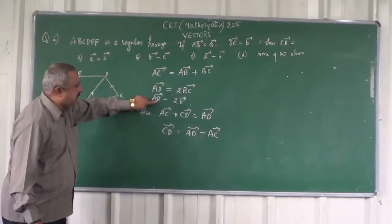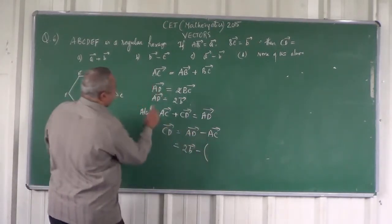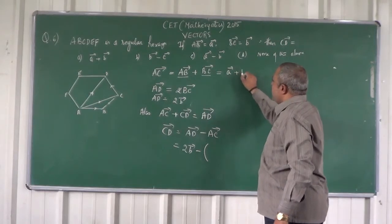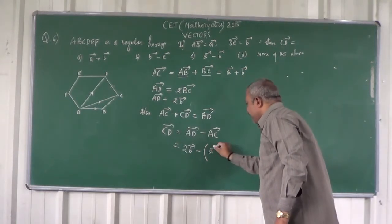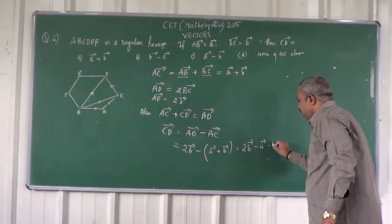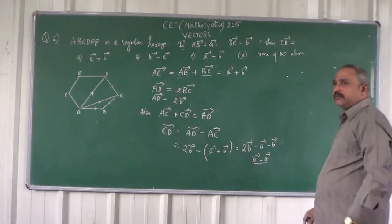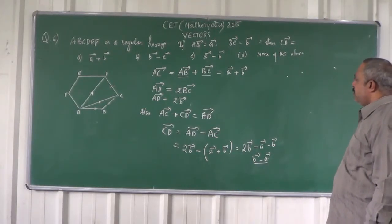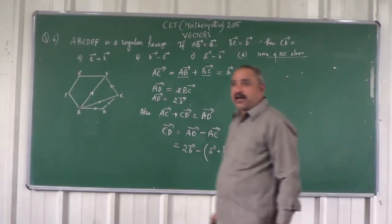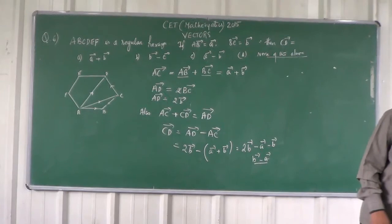I have the value of AC and the value of AD. So vector CD equals 2 times vector B minus vector AC, which is vector A plus vector B. That gives 2B minus A minus B, which equals vector B minus vector A. So the correct answer is Option B — none of the above listed options match; the answer is B minus A.